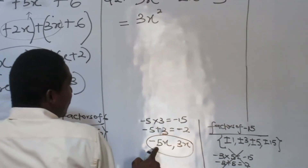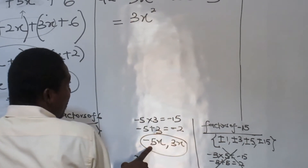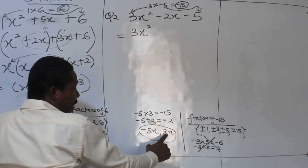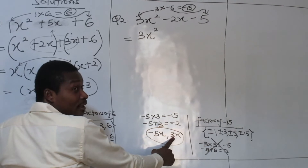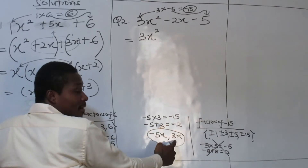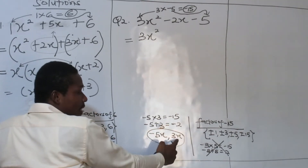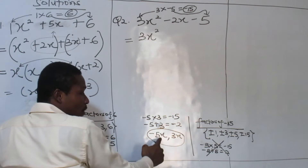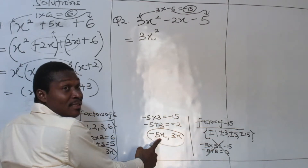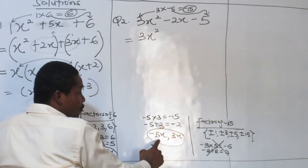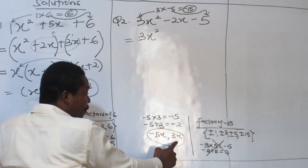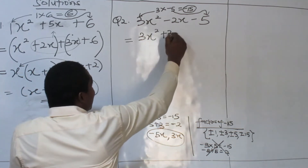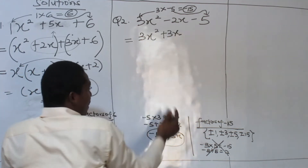x squared, it can be minus 5x, or you can even choose to bring that 3. It's a comma — it means this one can come, this one can also follow, or this can start, this one can also follow. It doesn't really matter; it is not in any proper order. So if you want to bring that 3 to make it easy, that is it.